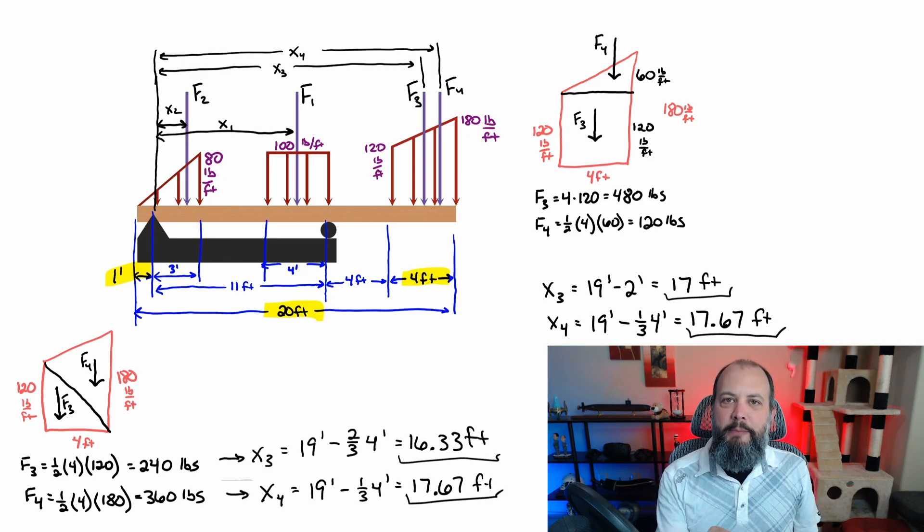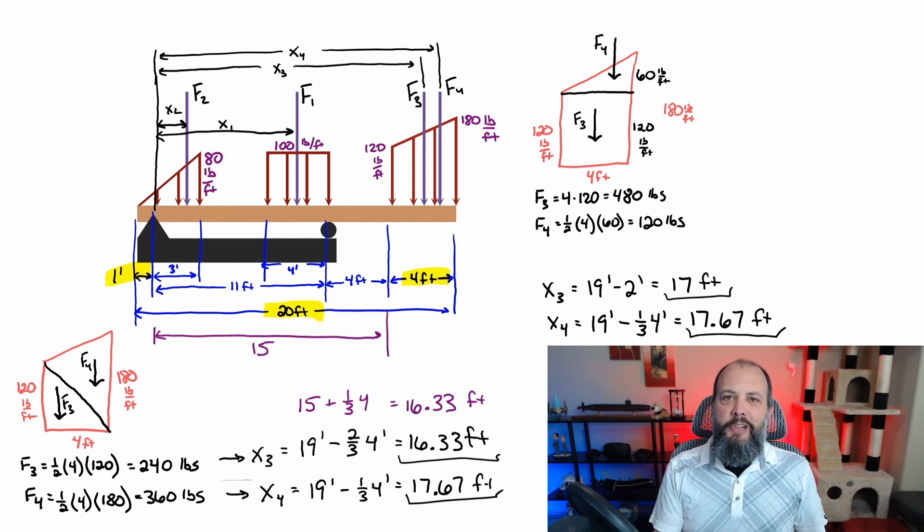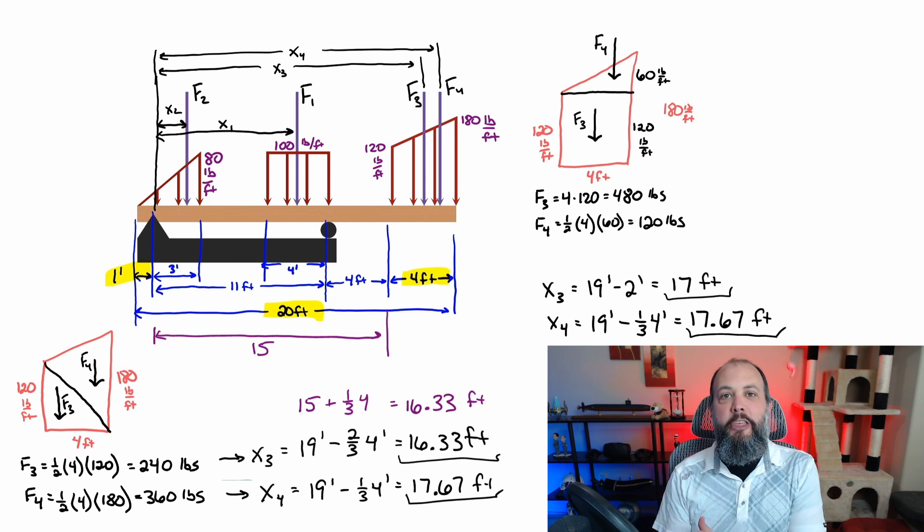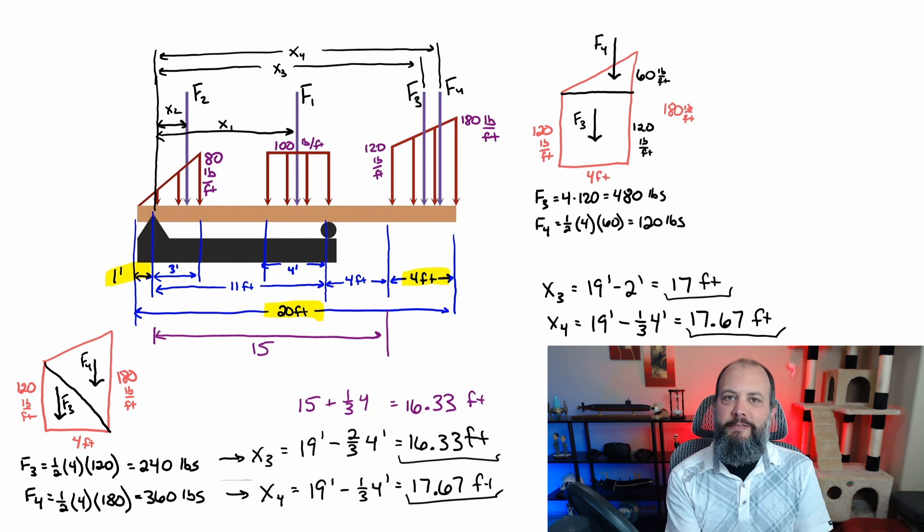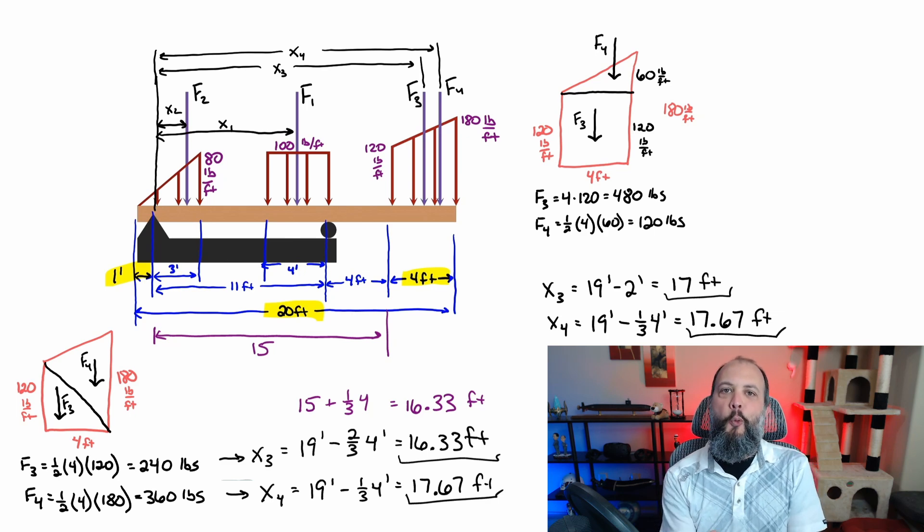But the 120-pound-foot triangle has its tall side on the left side of this distributed load. And so you can calculate this 16.33 feet location as either 19, the right-hand side, minus two-thirds of the base, or 15 feet to the left-hand side plus one-third of the base. And either answer gets you to a distance of 16.33 feet.